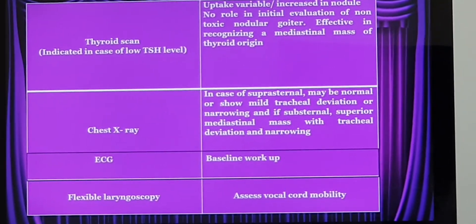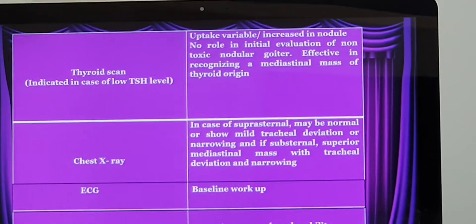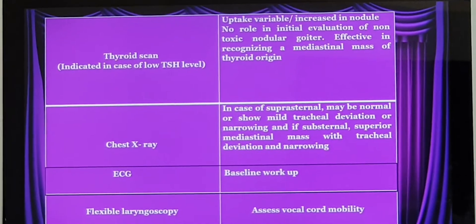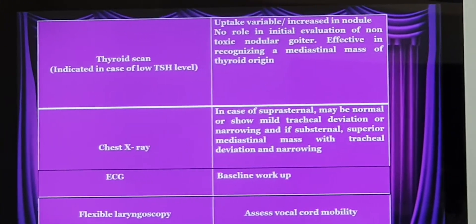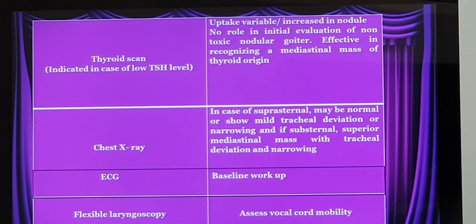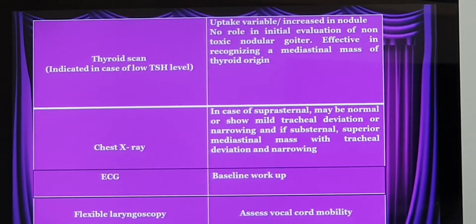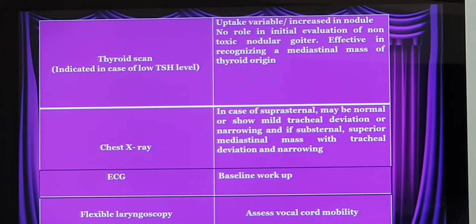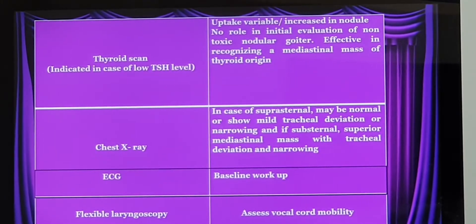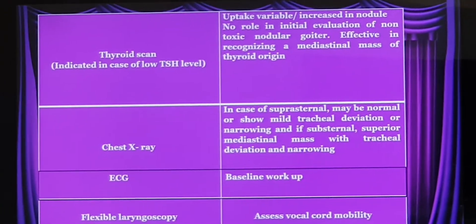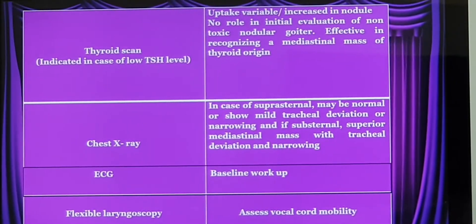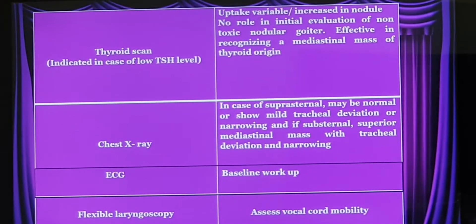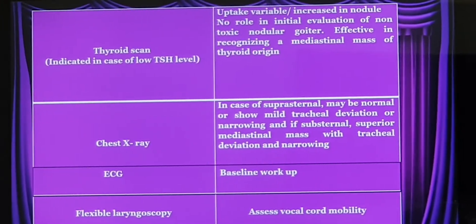The next basic investigations — chest X-ray and ECG — will be done. I will also do a flexible endoscopy, because inside the voice box you have vocal cords supplied by corresponding nerves. Suppose the thyroid gland is enlarged and compresses one of the nerves — it can paralyze that nerve and the vocal cord will not be moving properly. I will subsequently show you the normal action of the vocal cord and if it is paralyzed.